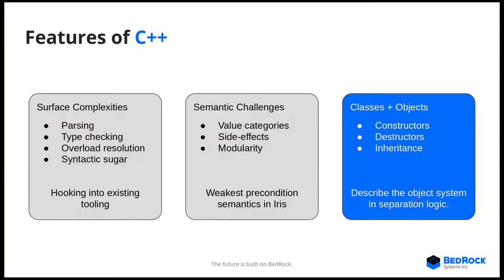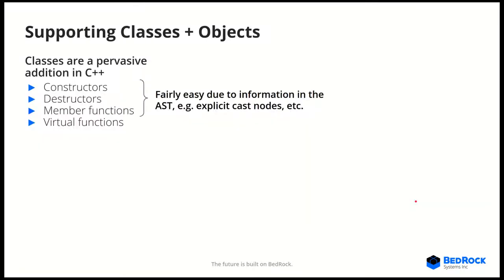The last feature I'll talk about is classes and objects. The idea is that we describe the object system inside the separation logic. A large portion of classes and objects can actually be desugared into C in a fairly naive manner. Constructors are member functions, and destructors are essentially just functions that have an extra implicit this parameter. Destructors do need to be invoked when the object is destroyed, but it's actually convenient because a destructor's precondition can mention the custom class representation predicate and destruct it appropriately, encapsulating what's going on.